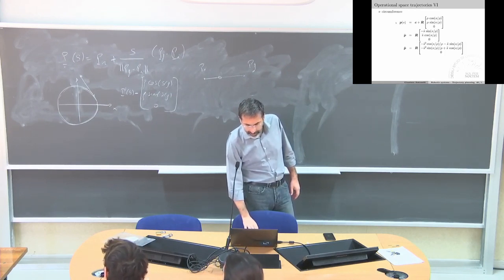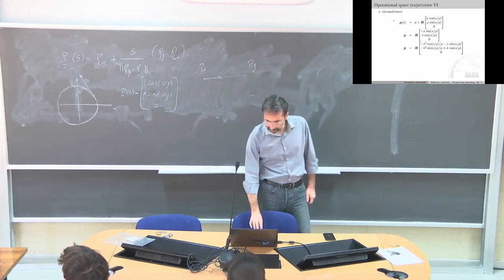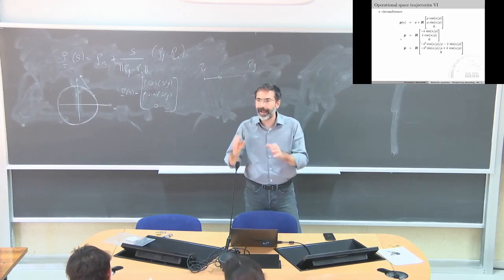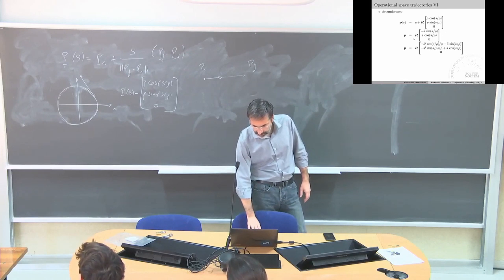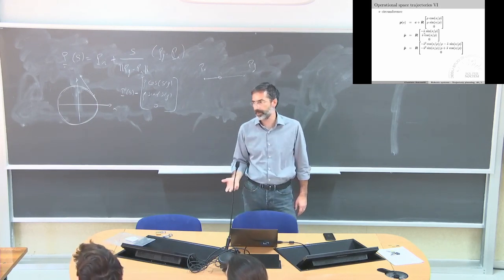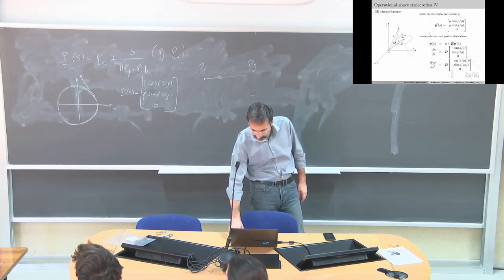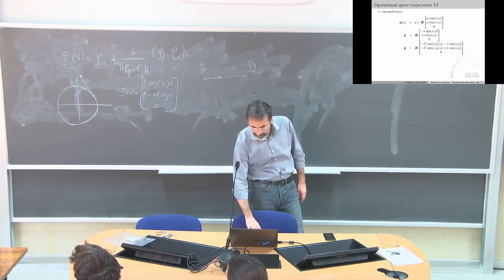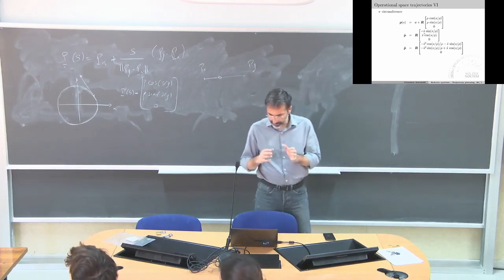The same applies for a circle. The time derivative of the position equals the rotation matrix R multiplied by the velocity term, where the time law is embedded in S-dot and the direction is given by the tangent vector. So S truly embeds the time law information for the trajectory.